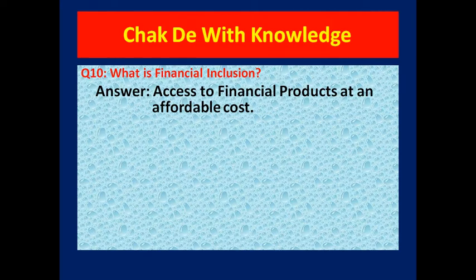Next question: what is financial inclusion? This is an important term in Indian banking. The answer is access to financial products at an affordable cost. Financial products include saving accounts, insurance policies, and mutual funds. Affordable means that even a poor person can access these services.